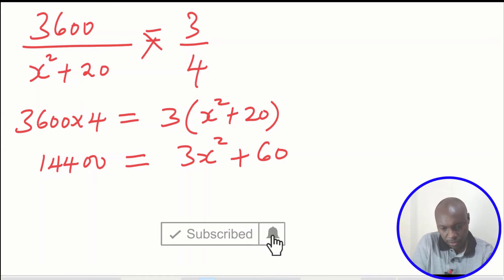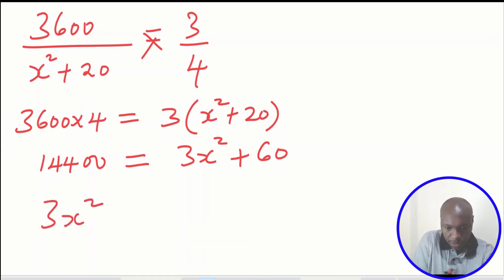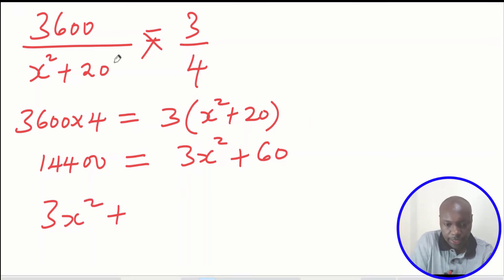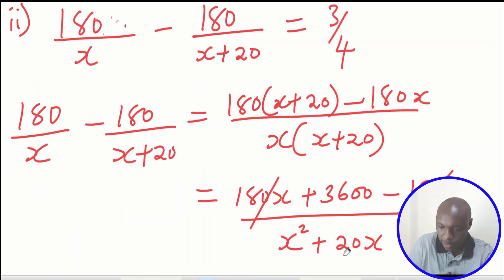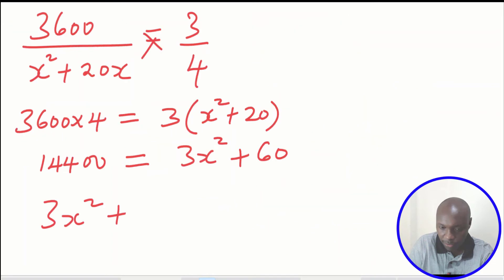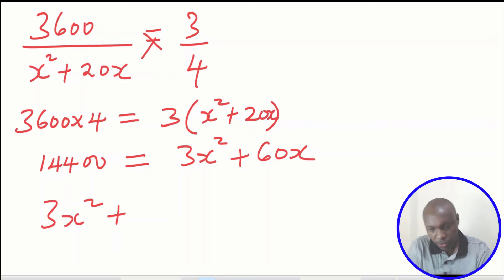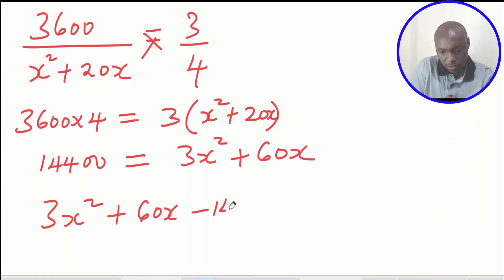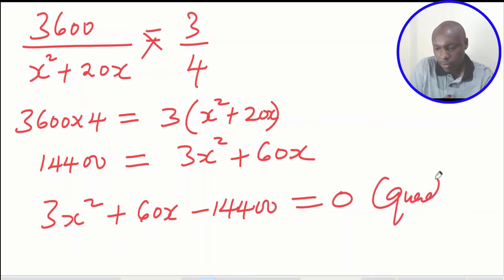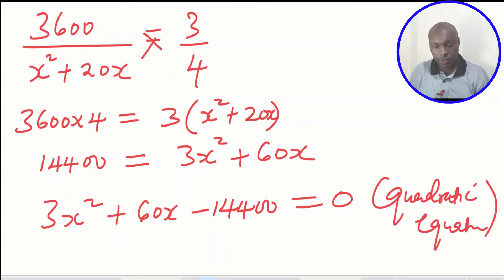Organizing this to form a quadratic equation: 3x squared plus 60x minus 14400 equals zero. Note there is an x term: opening 3 times 20x gives 60x. So this gives 3x squared plus 60x minus 14400 equals zero. This is now a quadratic equation. There are several ways of solving it: using factorization or using the quadratic formula.